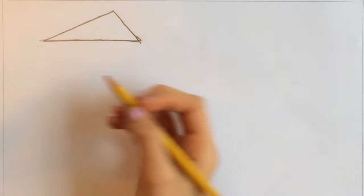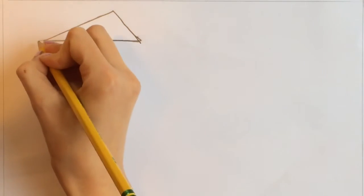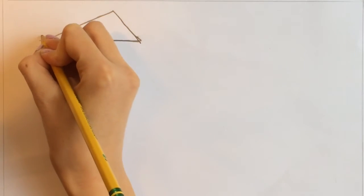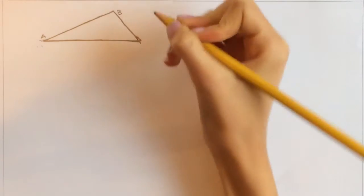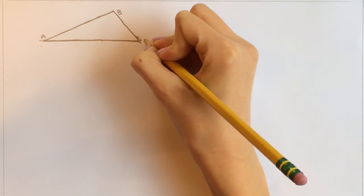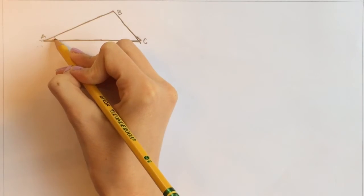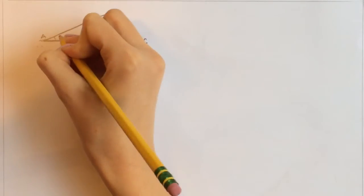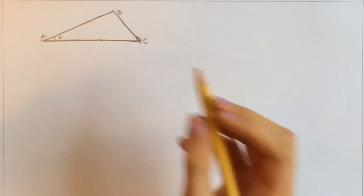So right here I just have a normal scalene triangle, and I'm going to name each point. This is point A, this is point B, and this is point C. We also know that this is angle A, this is angle B, and this is angle C.